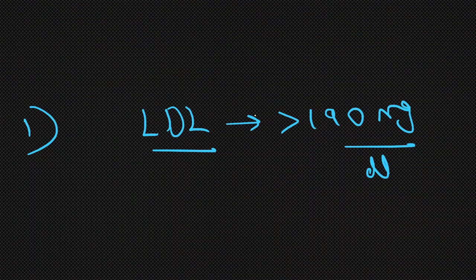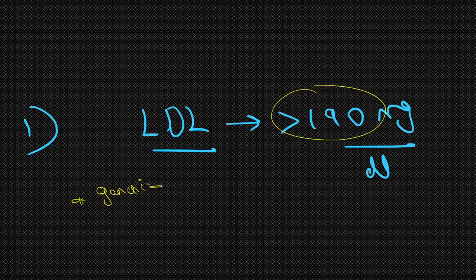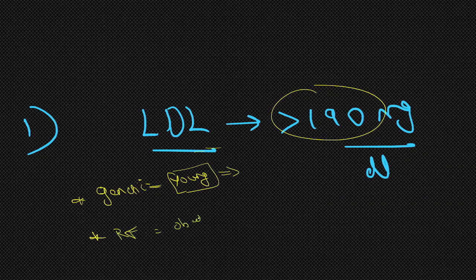Clinical Point 1: If LDL is more than 190 milligram per deciliter, always think of a genetic cause. The name is familial hypercholesterolemia. In a young population without many risk factors, a very high LDL may indicate a genetic cause requiring further evaluation and treatment. At such high levels, the patient may also have risk factors like obesity, diabetes, smoking, and alcoholism. So if LDL is more than 190, think of genetic causes, risk factors, and poor dietary habits.